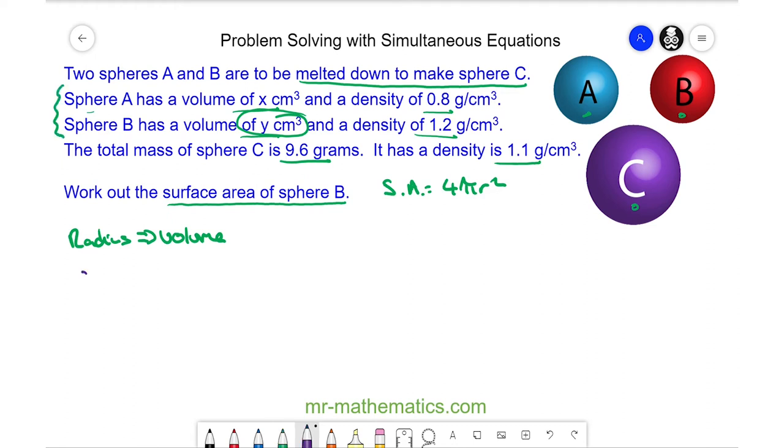For sphere A, density equals mass over volume. The density is 0.8 and the volume is X, so we can rearrange this to make mass equal to 0.8X. I moved X to the other side by multiplying it.